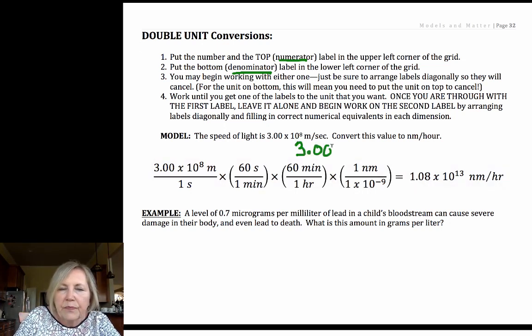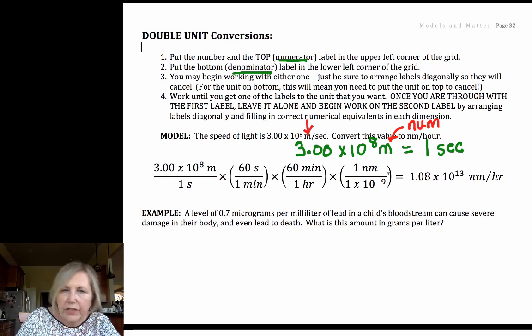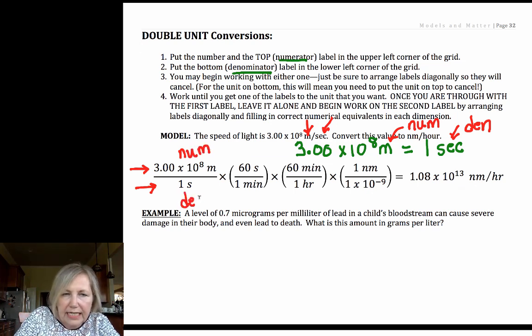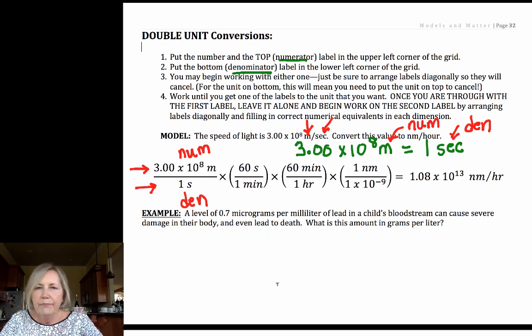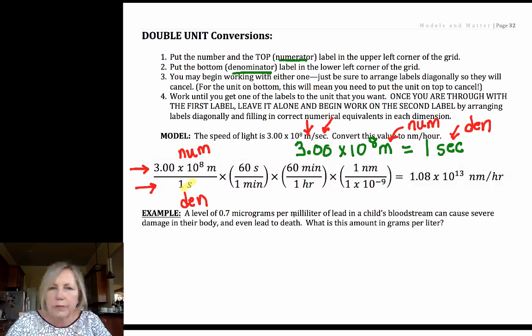What you want to do is recognize that you have 3 times 10 to the 8th meters for every one second. The meters in this case is a unit that's in the numerator of the unit, the seconds are in the denominator of the unit. So I'm going to put the meter part in the numerator and that implied one second in the denominator. Now we have to convert them. Since this is all multiplication and division, it doesn't matter which you choose. I did seconds first. I like to deal with my denominator first.